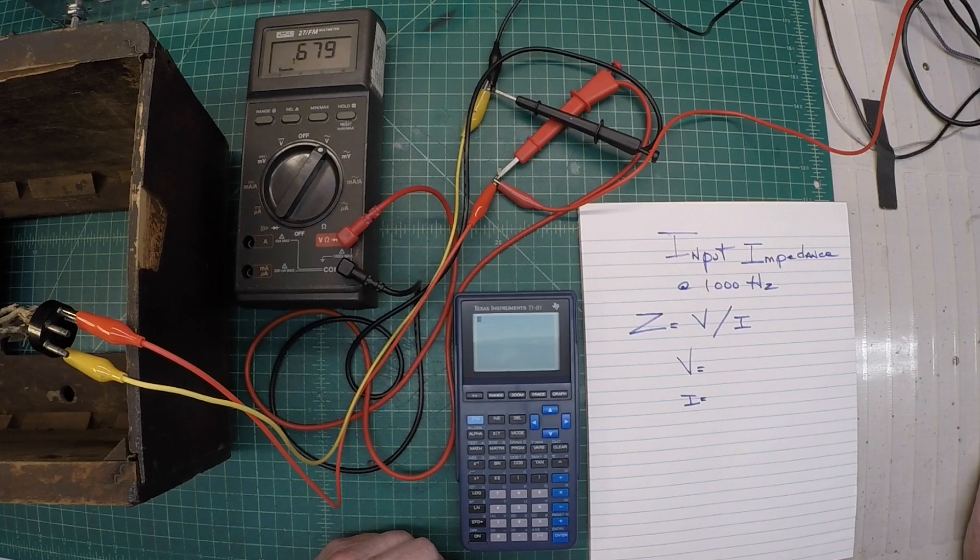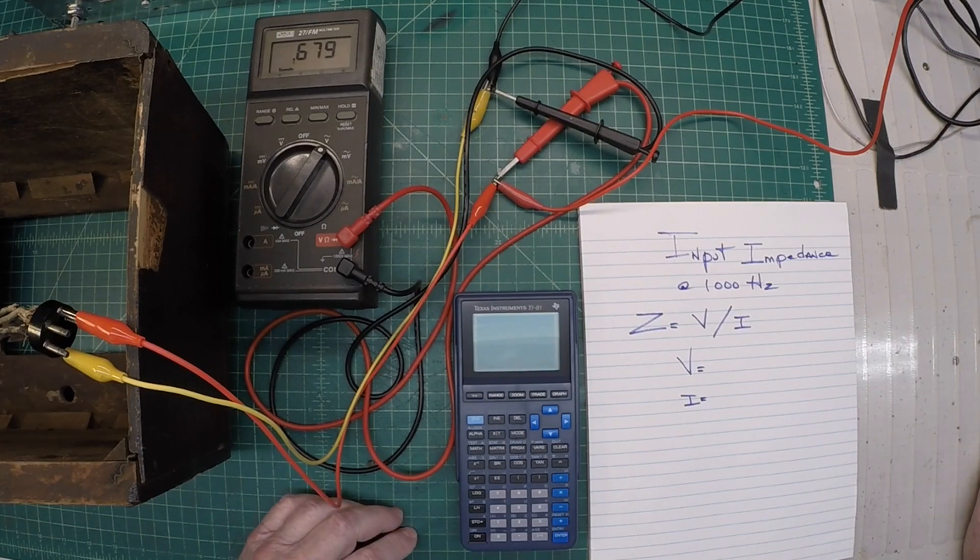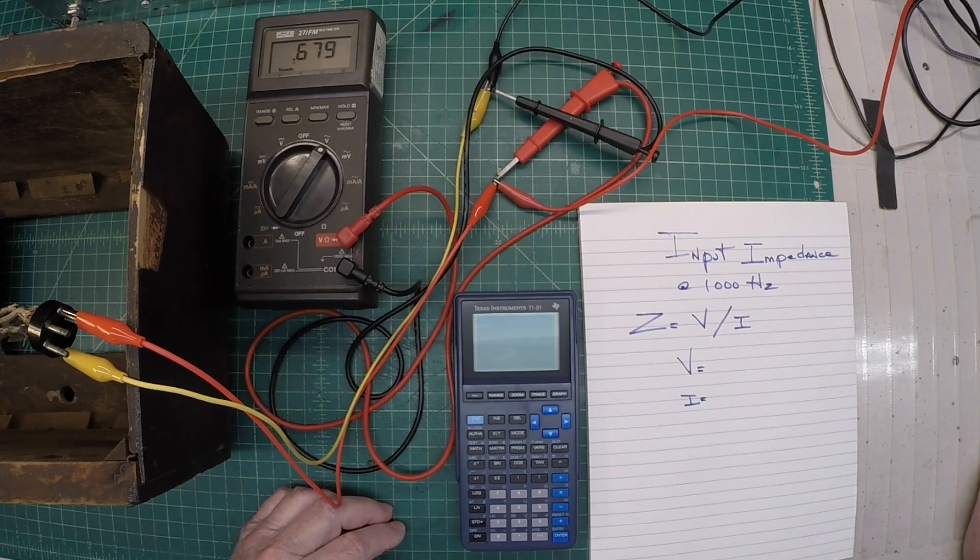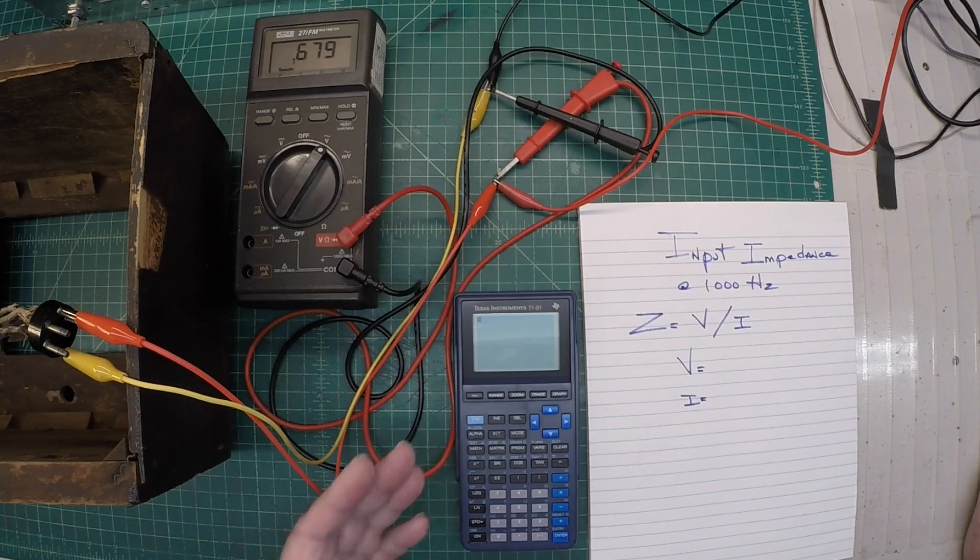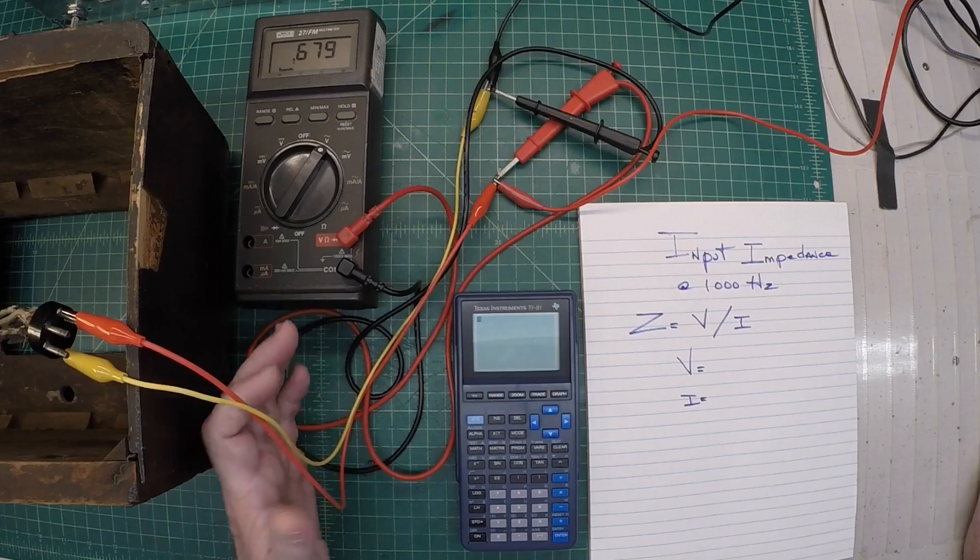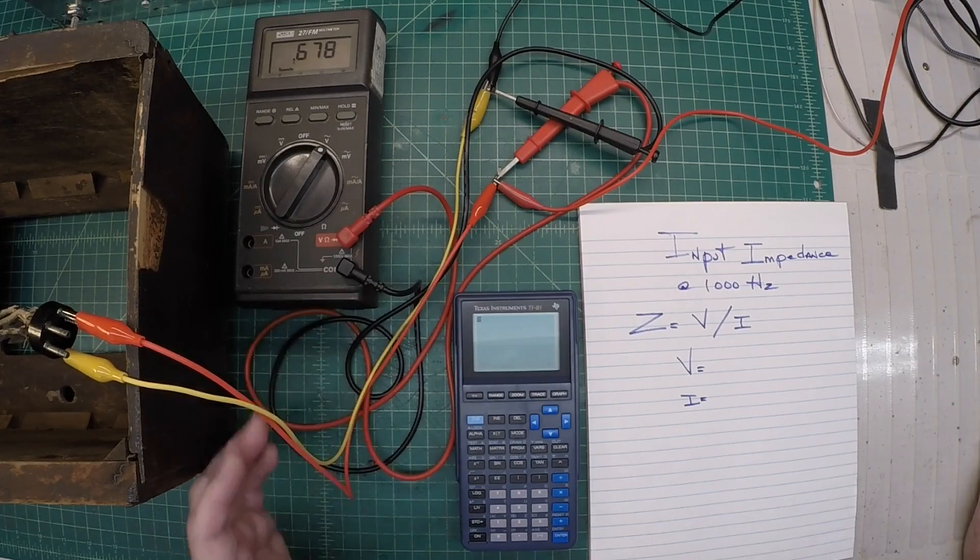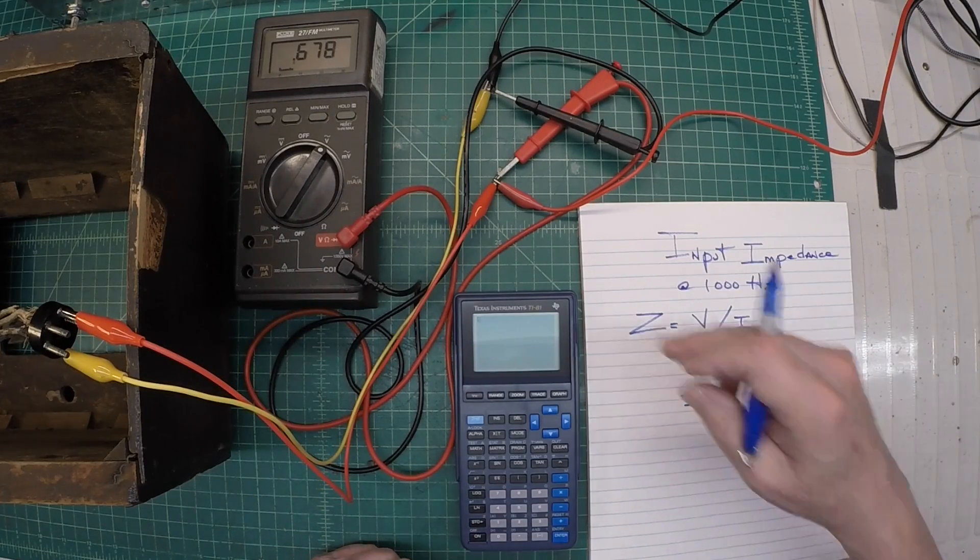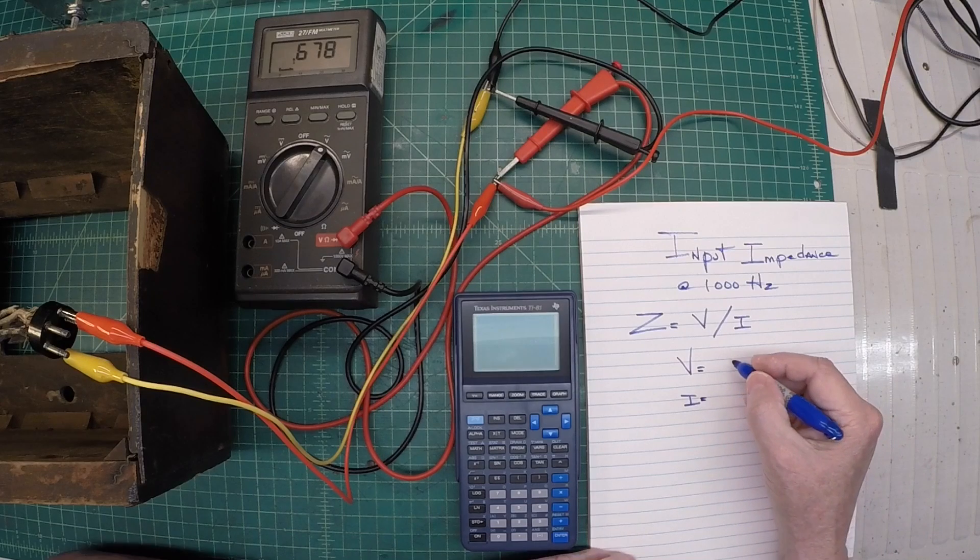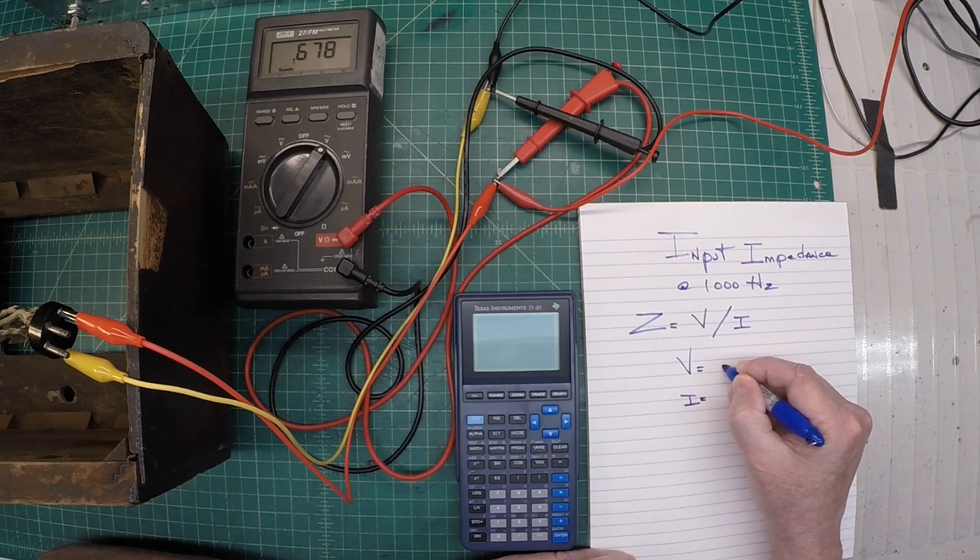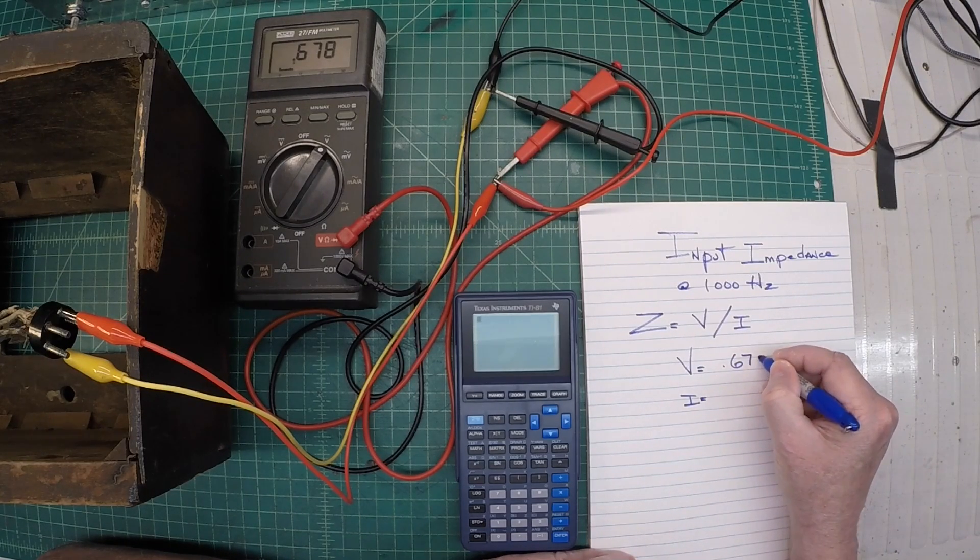Okay, I've went ahead and turned the signal generator on here, generating a tone very close to 1000 Hertz. And I've just got the meter hooked up here looking at AC voltage. So let me just take a note of what we have here on the meter at 0.678 volts.